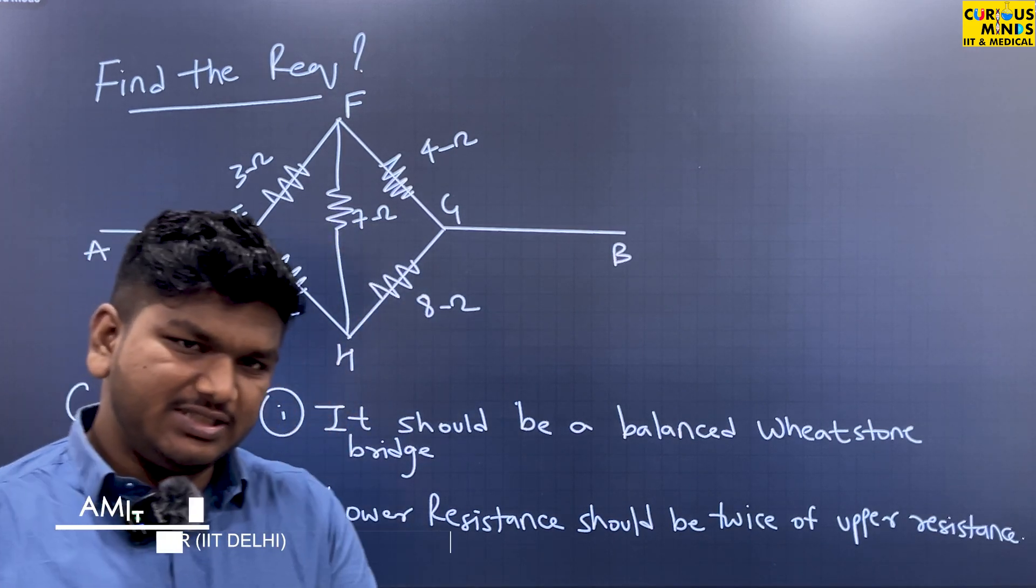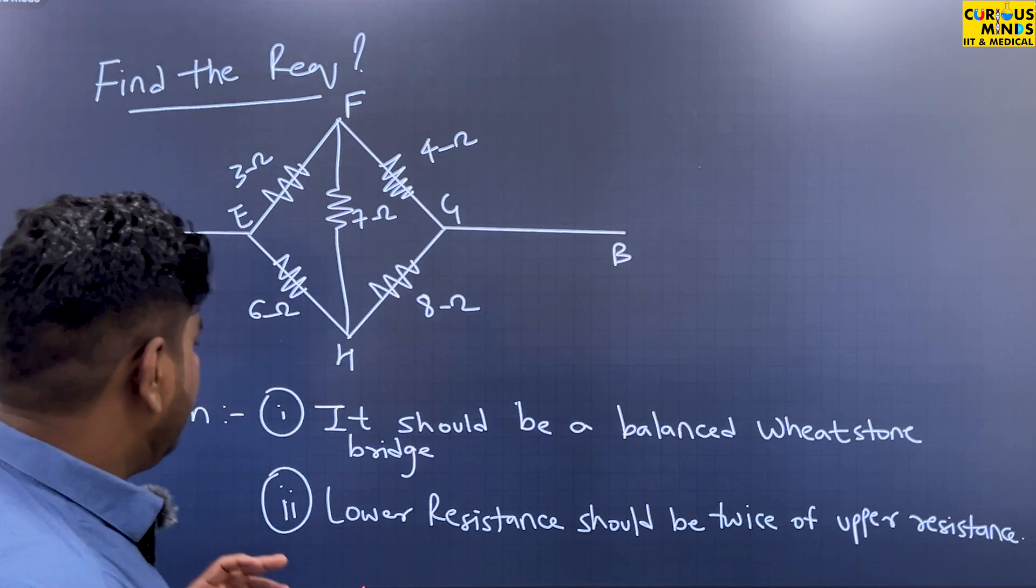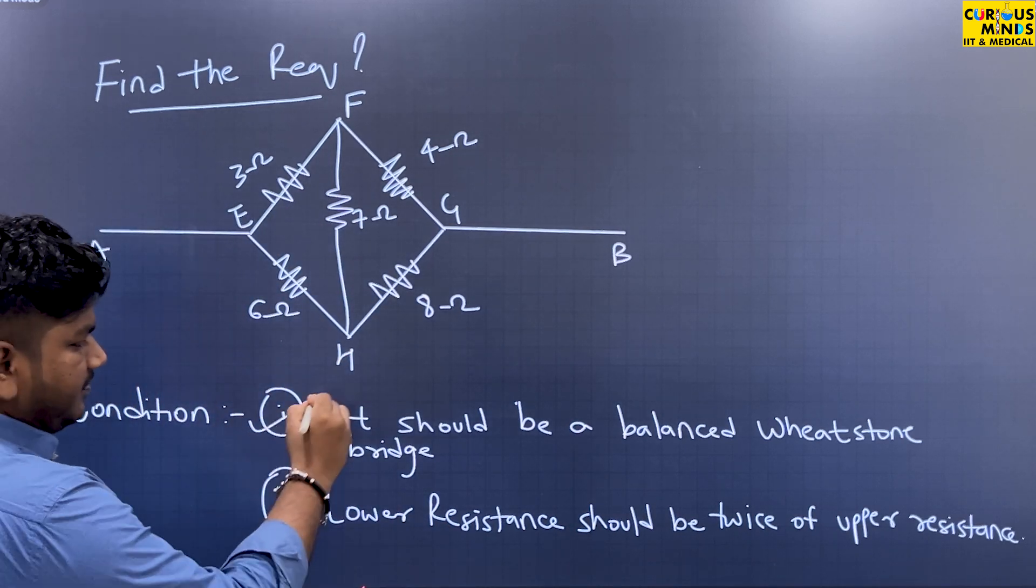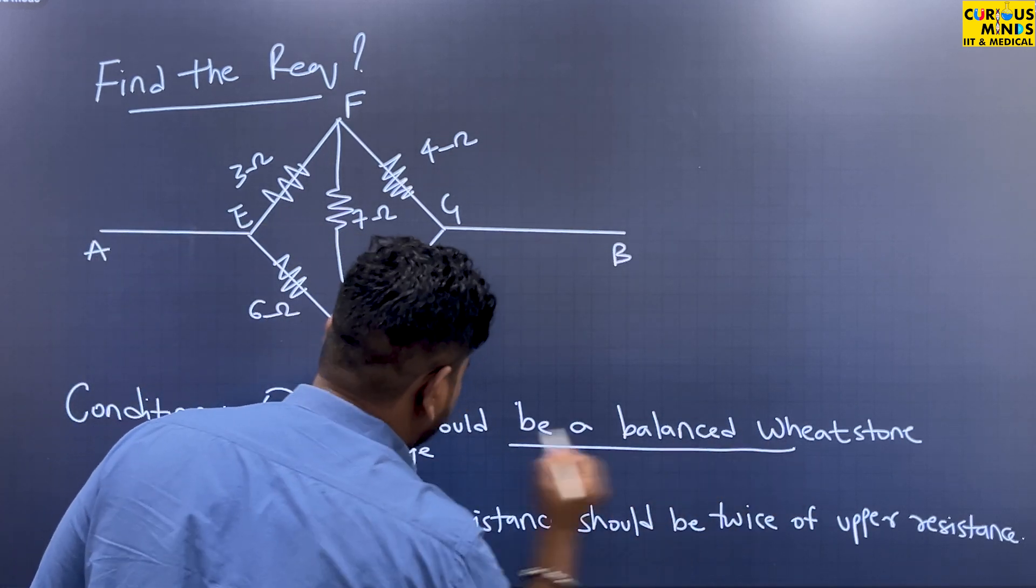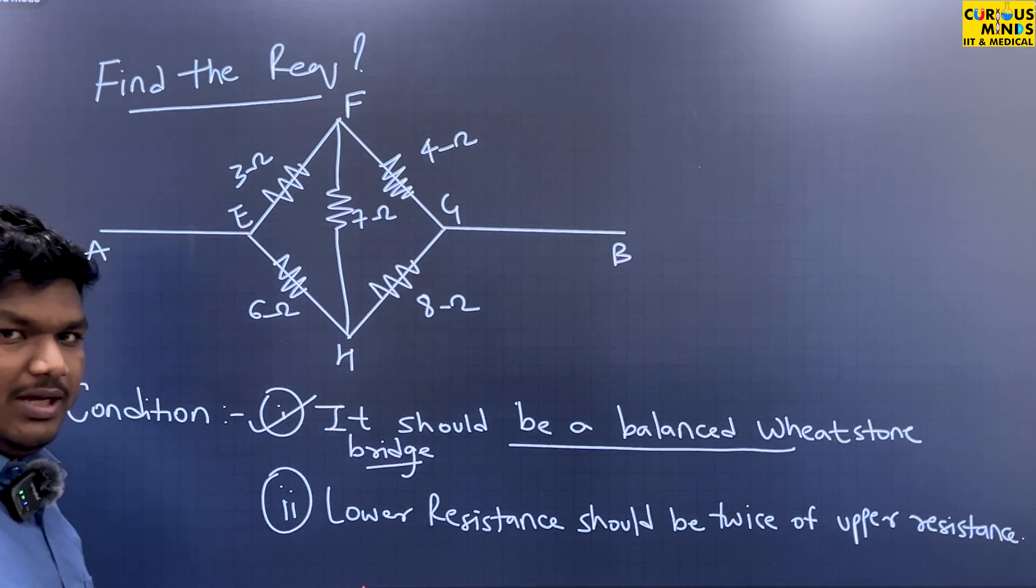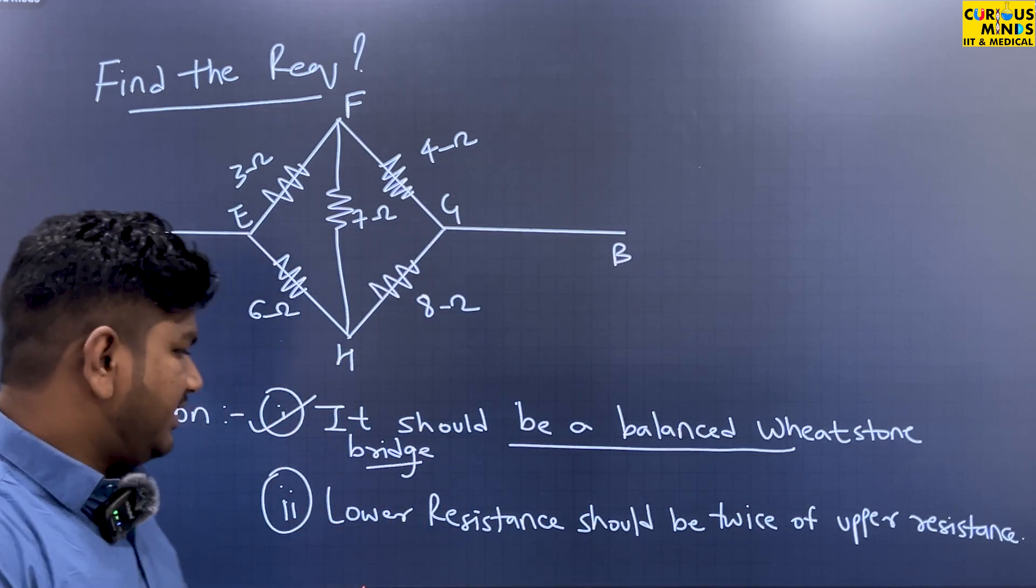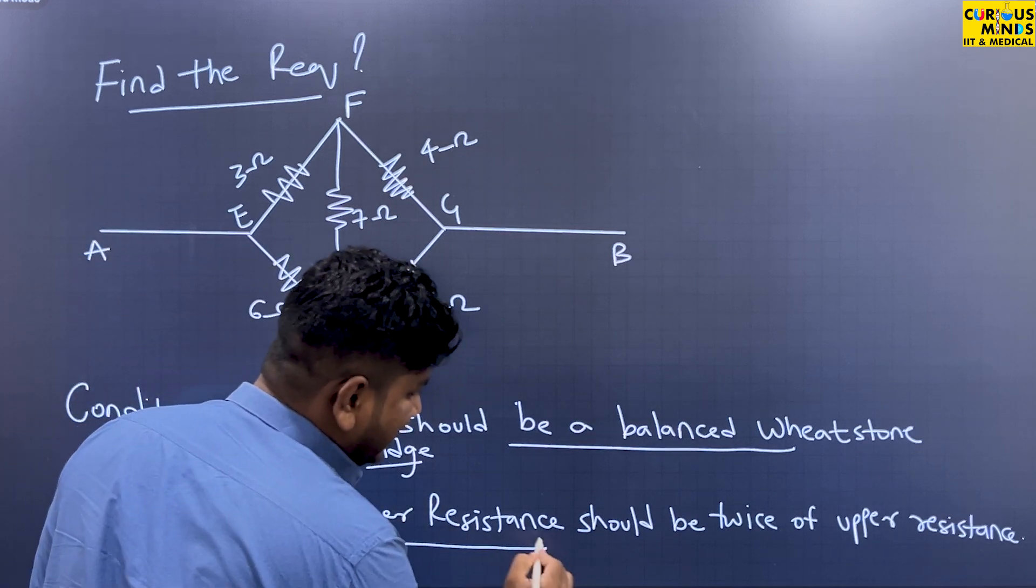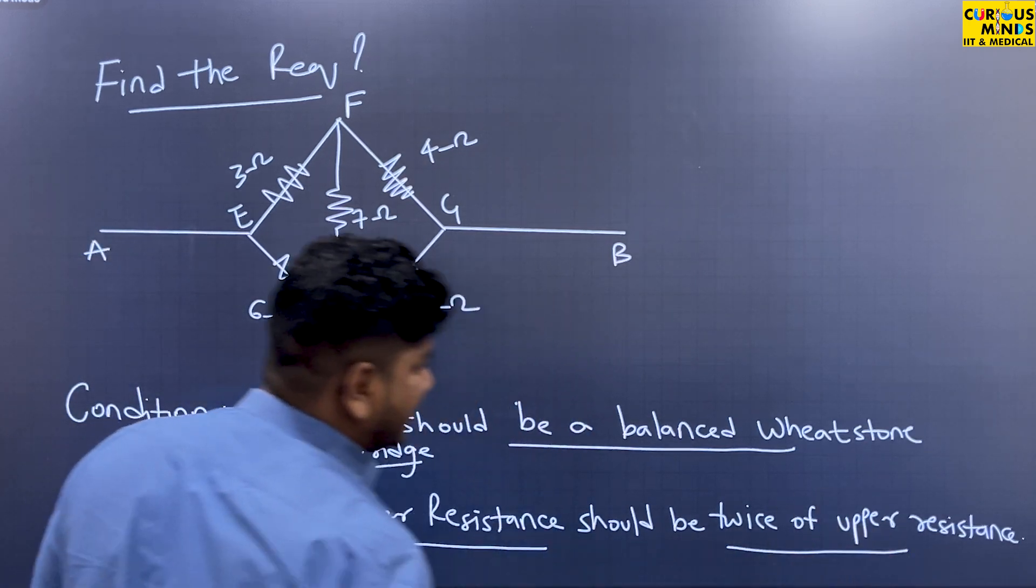There are some conditions you have noticed. The conditions are: it should be a balanced Wheatstone bridge, and the second condition is that the lower resistance should be twice the upper resistance.